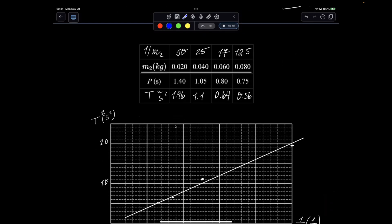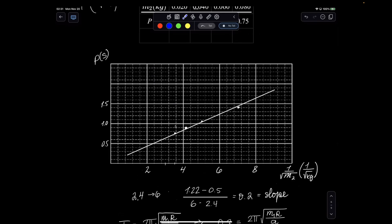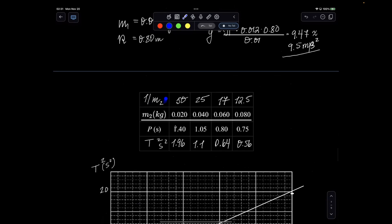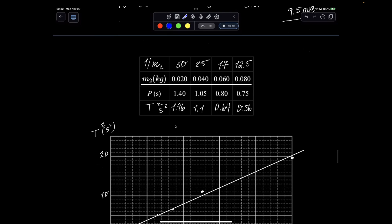My second option was graphing period squared versus 1 over m2. So here I did period versus 1 over root of m2. Now I'm getting m2 still in the denominator. However, it's not rooted. Therefore, t is squared.